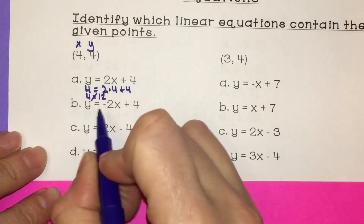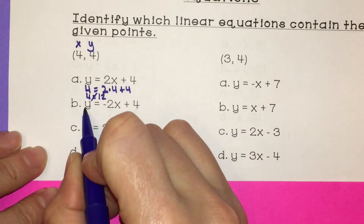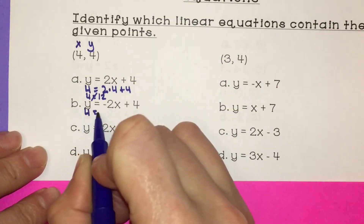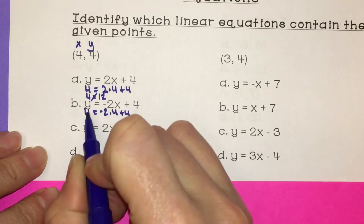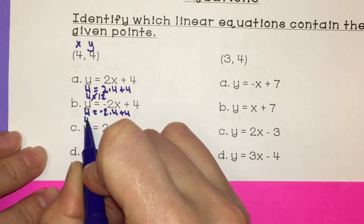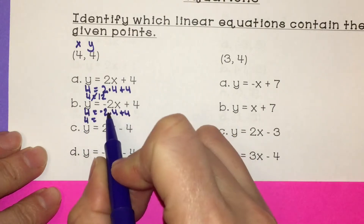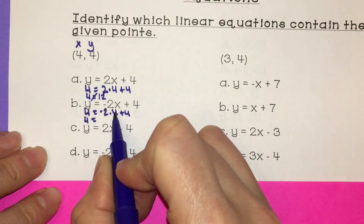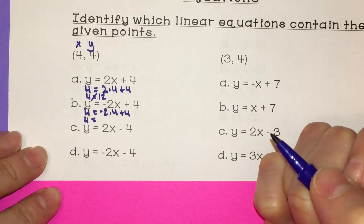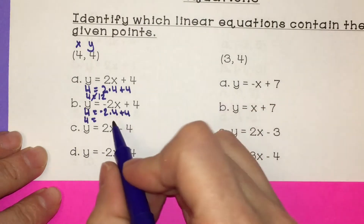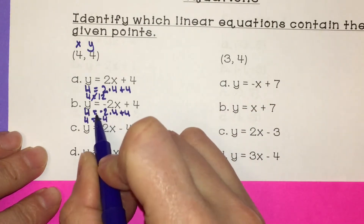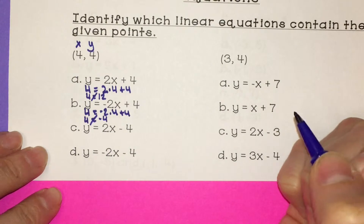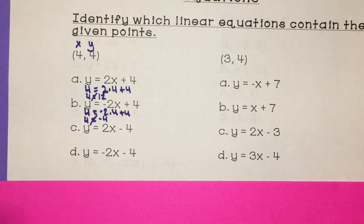So then I'm going to plug it into this one. y is 4 equals negative 2 times 4 plus 4. Bring down: 4 equals negative 2 times 4 is negative 8, and negative 8 plus 4 is negative 4. The two sides are not equal — 4 is not equal to negative 4.